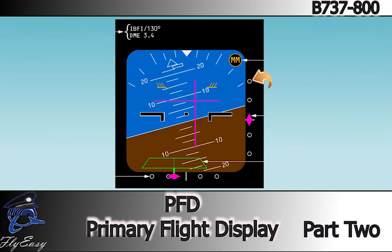The Glide Slope Scale appears when a valid frequency is tuned. The Glide Slope Pointer appears when the Glide Slope Signal is received, and indicates Glide Slope relative to the aircraft position.